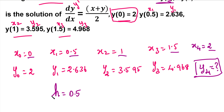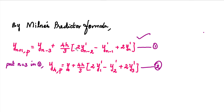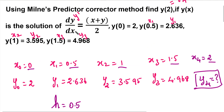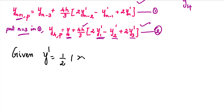This is the h value. At the Milne's predictor general formula, the whole timeline is in terms of n. If we are finding x4, n = 4, so we substitute n = 3. We already know y0 and h. We can compute the remaining values using the differential equation: y' = (x + y)/2, that is y' = (1/2)(x + y).